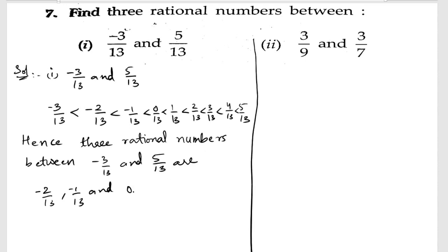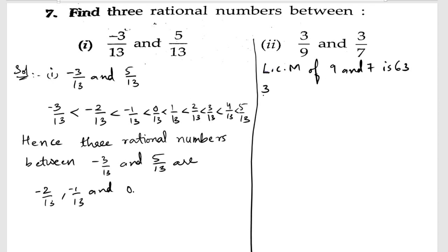In the second part we have 3/9 and 3/7. We have to find three rational numbers between them, so we need to write down the LCM of 9 and 7. The LCM of 9 and 7 is 63.